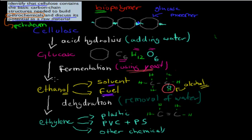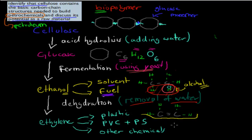If we have ethanol, we can dehydrate it — dehydration refers to the removal of water. We take our ethanol and literally remove the water portion, and what we have left over is ethylene. Ethylene has double bonds between carbons, and that allows us to make plastics such as polyethylene, polyvinyl chloride, and polystyrene.